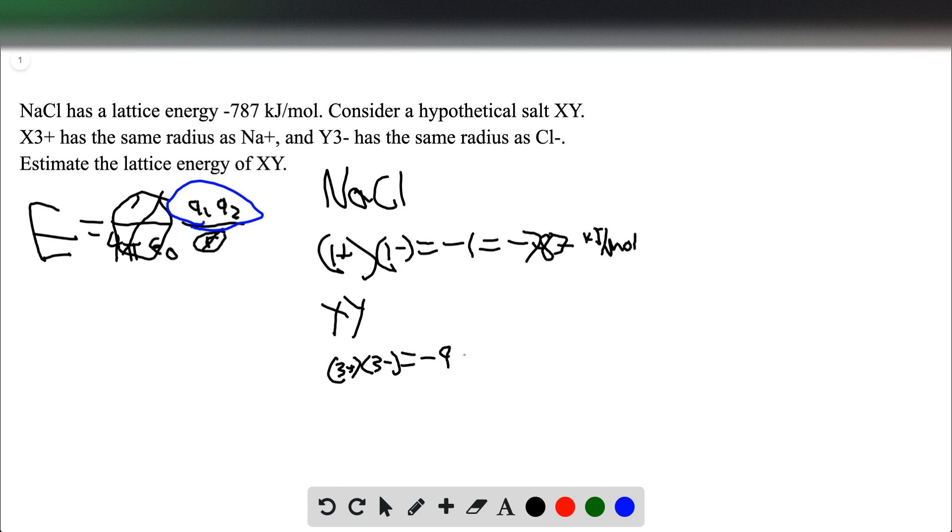So then we're going to take 9 times 787, which we can estimate to be negative 7,083 kJ per mole for our hypothetical salt.